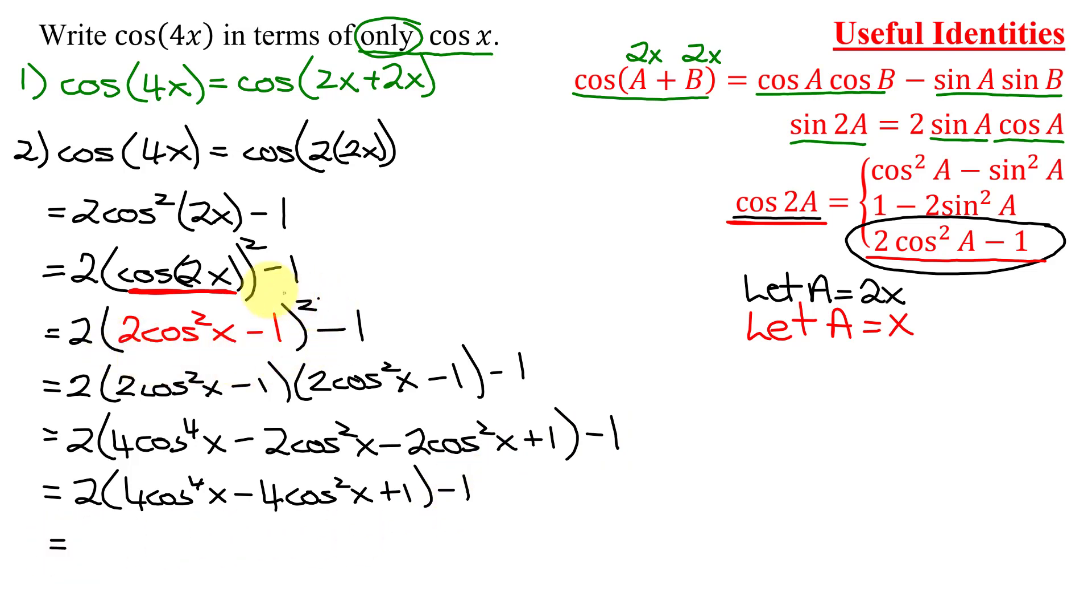Now, if you remember the shortcut for squaring a binomial, you can go straight from this step to this step. So now distributing in the 2, 2 times 4 is 8 times cosine to the 4th x. 2 times negative 4 is negative 8 cosine squared x. And 2 times 1 is plus 2 minus 1.